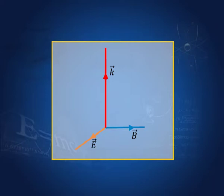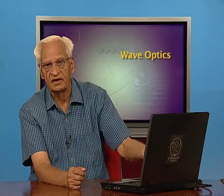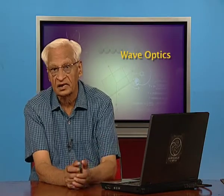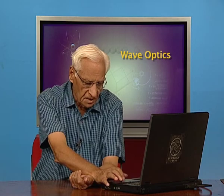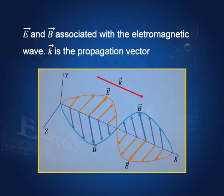The relation between E, B, and K — where K is the vector along which the light travels — is E cross B equal to K, i.e., E vector cross B vector equals K vector. Here we have shown the oscillations of the electric field and of the magnetic field, both being perpendicular to the direction of propagation of light.